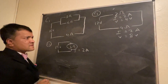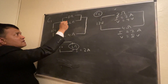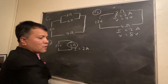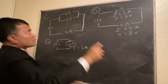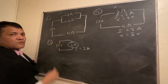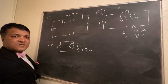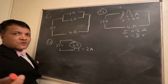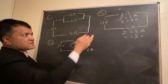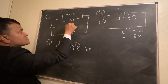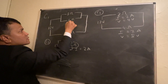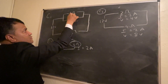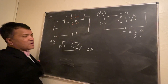The two-ohm equivalent resistance is the parallel combination of three and six. In a parallel relationship, what is the same? Voltage. So the voltage across the three-ohm resistor is 4 volts and the voltage across the six-ohm resistor is also 4 volts.